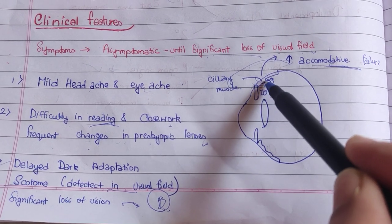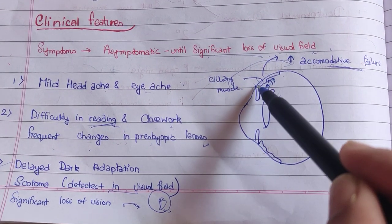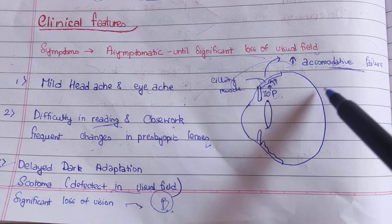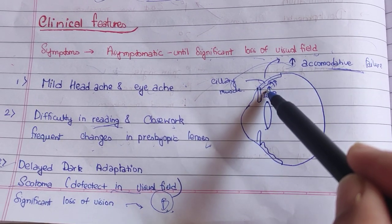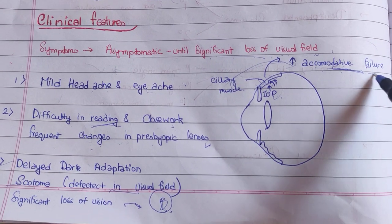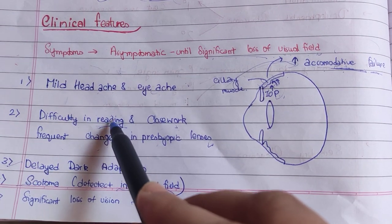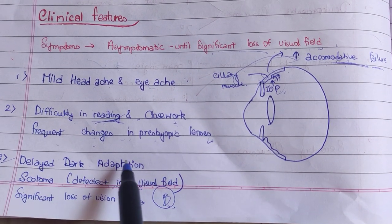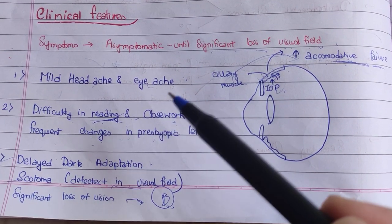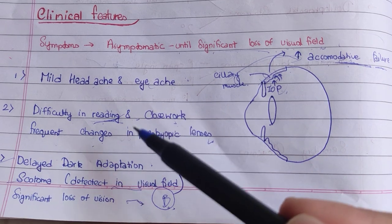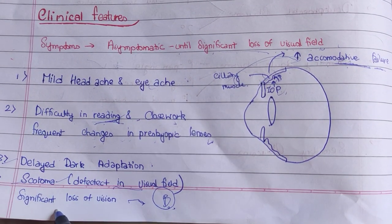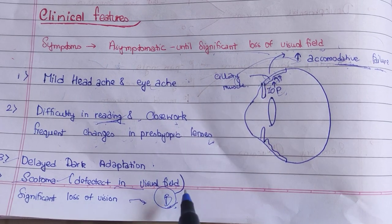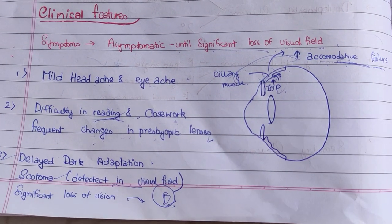The ciliary muscle controls the accommodative reflex. Increased IOP puts pressure on the ciliary muscle's nerve supply, causing accommodative failure, which leads to difficulty reading near objects. Then there is delayed dark adaptation — patients take longer to adapt in the dark. Scotoma develops, with significant progressive vision loss, and ultimately the patient can become blind if treatment is not taken.